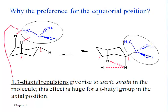So these are called 1-3-diaxial interactions or repulsions. And that repulsing effect is so great that the t-butyl group refuses to put up with it.